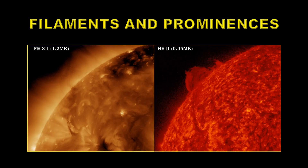One of the other things that the iron 12 line is useful for is looking at filaments and prominences. Here is a prominence seen in the usual helium 2 304 line at about 50,000 degrees temperature. A prominence is a bright structure above the surface of the sun on the limb of the sun. You can see the exact same structure here in the iron 12 line, but it's not quite so clear.